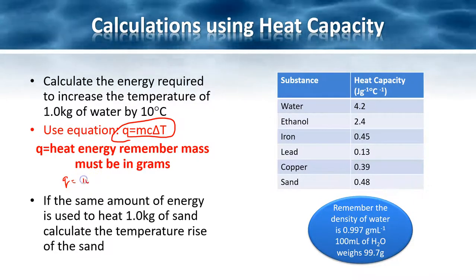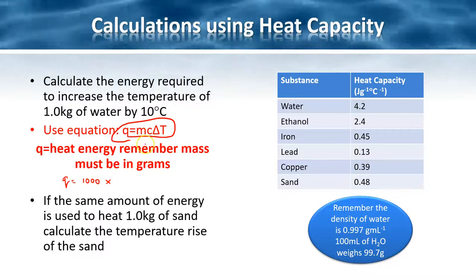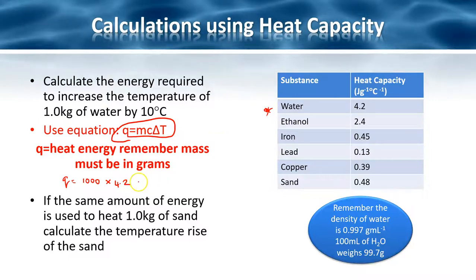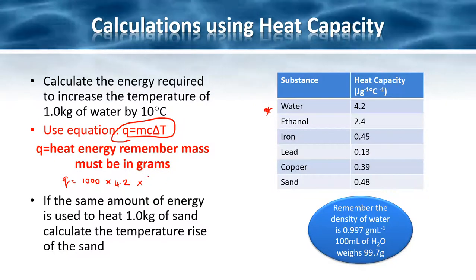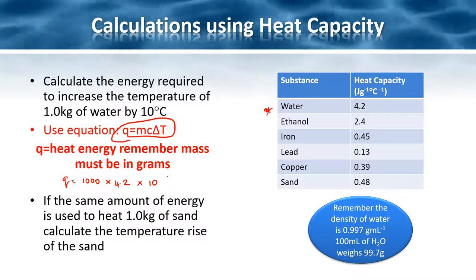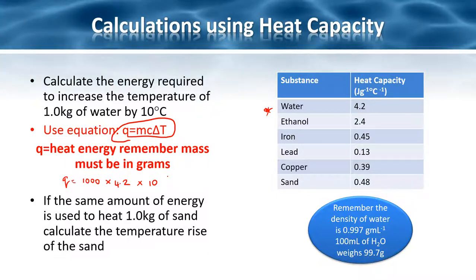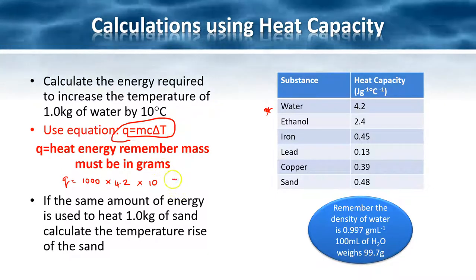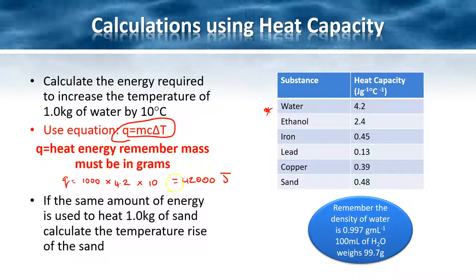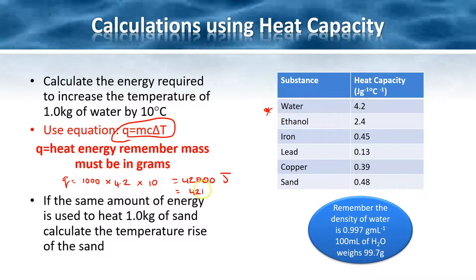If I want to work out the heat energy, the mass is going to be one kilogram, so I'm going to convert that to grams, which will be 1000. I'll multiply by the specific heat capacity, which is 4.2 for water, and then multiply by the change in temperature. Because it wants me to increase the temperature by 10 degrees, 10 is going to be my change in temperature. So I get 42,000 joules, which I can convert to 42 kilojoules.